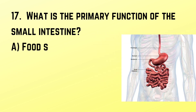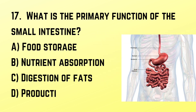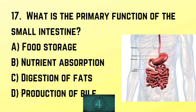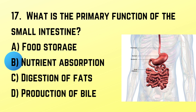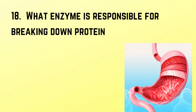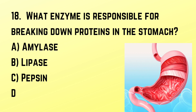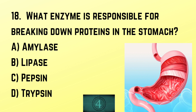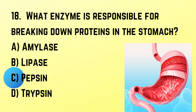Question number 17: What is the primary function of the small intestine? Correct answer: B. Nutrient absorption. Question number 18: What enzyme is responsible for breaking down proteins in the stomach? Correct answer: C. Pepsin.